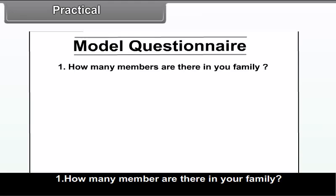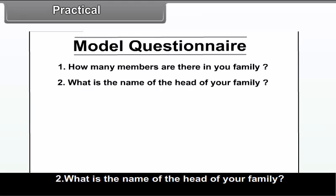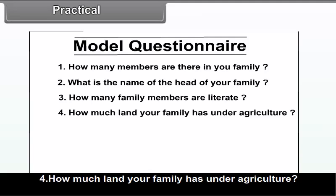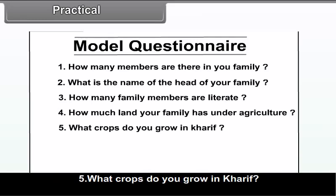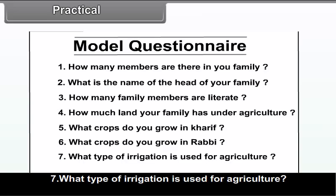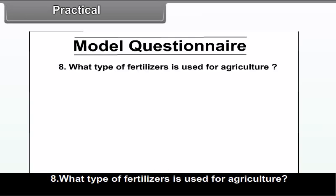How many members are there in your family? What is the name of the head of your family? How many family members are literate? How much land does your family have under agriculture? What crops do you grow in Kharif? What crops do you grow in Rabi? What type of irrigation is used for agriculture? What type of fertilizers are used for agriculture?